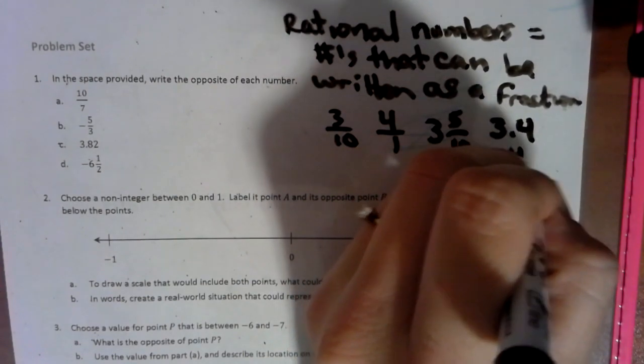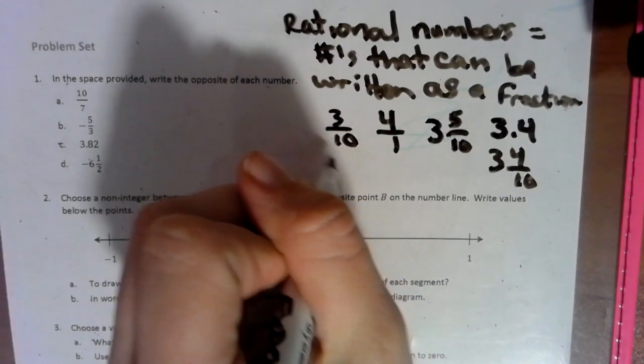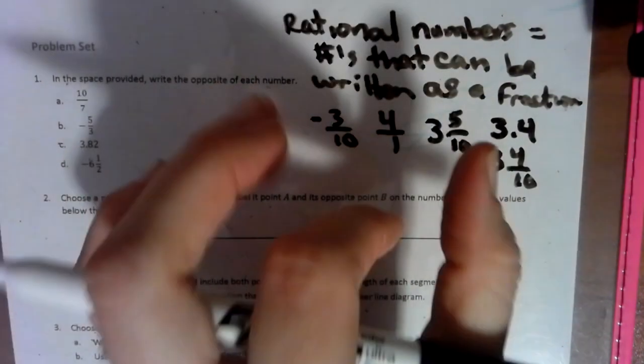which could be written as three and four tenths, or it could just simply be like a negative number, a negative fraction or something. So these are all versions of rational numbers.